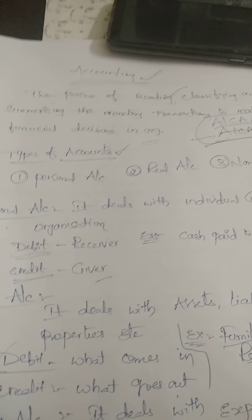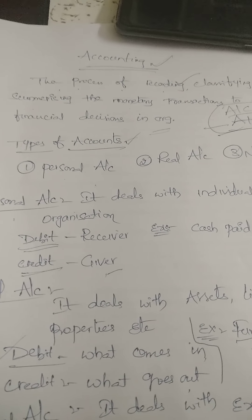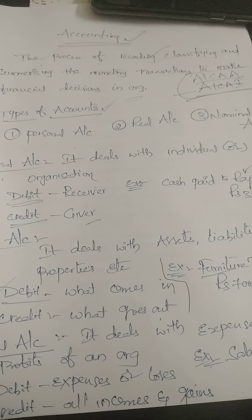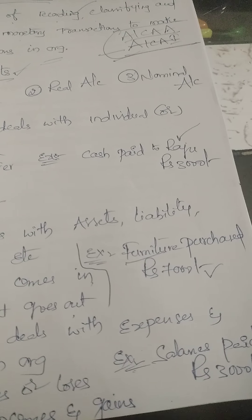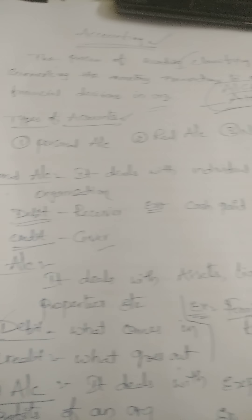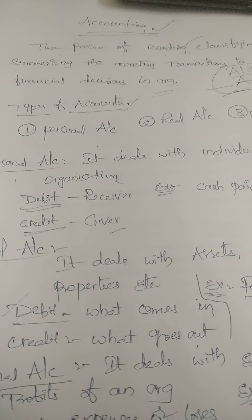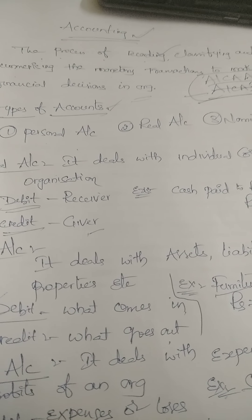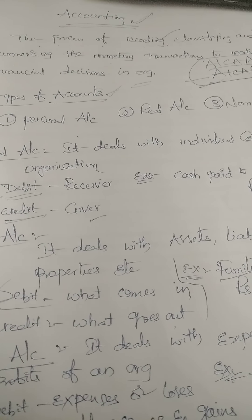Coming to the personal account, debit is the receiver and credit is the giver. Coming to the real account, it deals with assets, liabilities, and properties — what the companies are purchasing for their operations. For example, furniture purchased — furniture is the asset for the organization, so the transaction is shown under the real account. Under real account, debit is what comes in, and credit is what goes out.